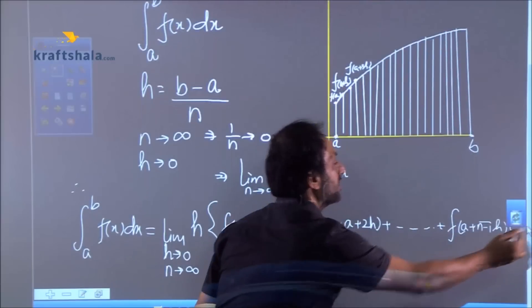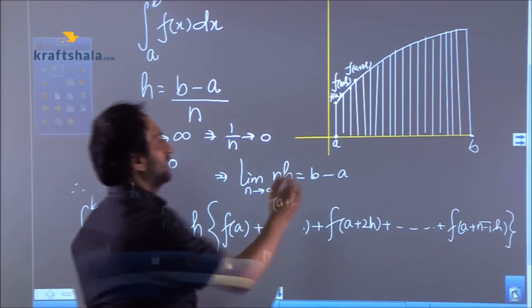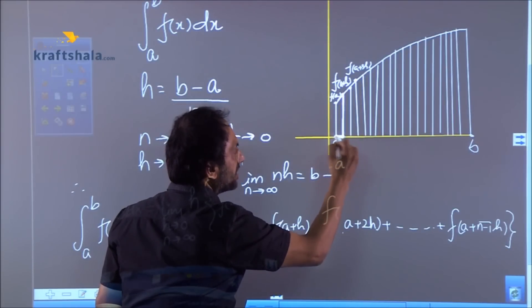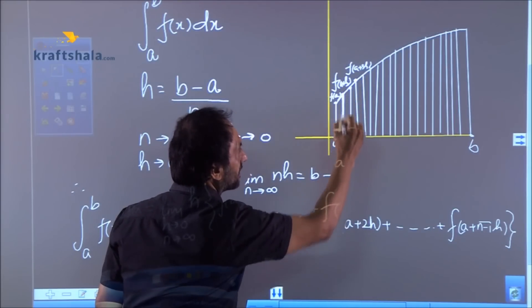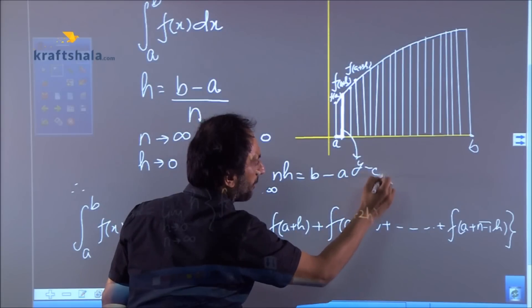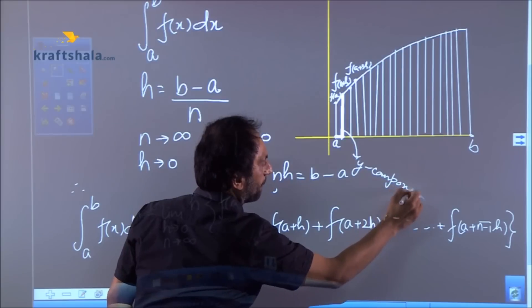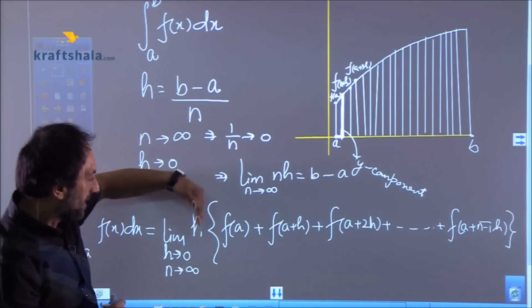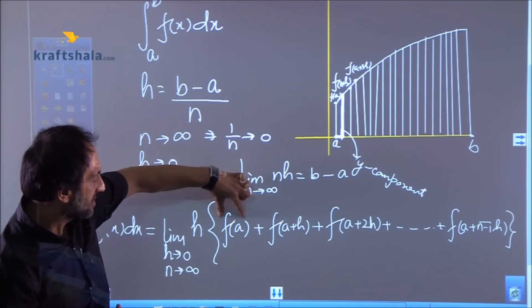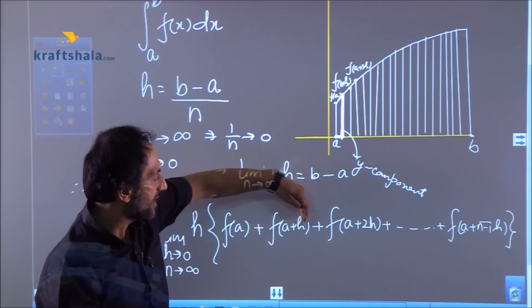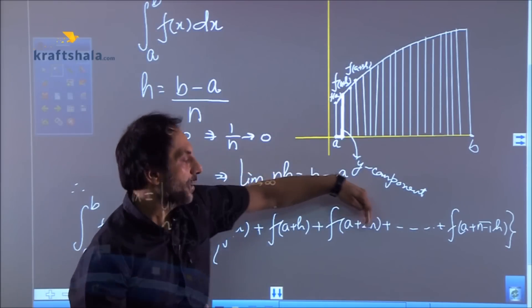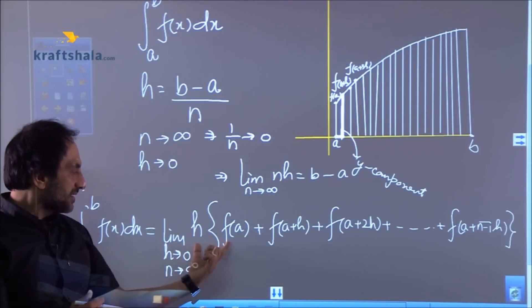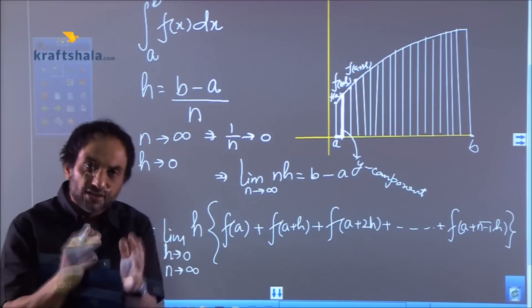So using the concept, everyone knows the area of the rectangle, that this is length into breadth. So this h is the width and this is the length. This length is the y component. So my width is h for each rectangle and length is increasing. So the first length is f(a), the second length is f(a+h), the third is f(a+2h), and we are going up to n minus 1. Can you not see that this is simply the summing up of all the areas of the rectangle?